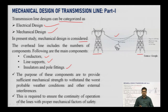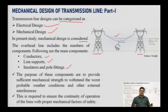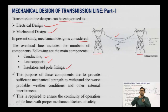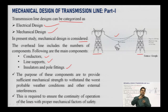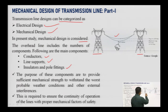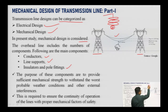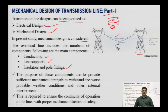Insulators are needed because the supportive system is a metallic structure and the conductor is also metallic. We need to electrically isolate these two from each other. We do this by inserting a dielectric medium — an insulator — between them. You may have seen disk-type structures hanging on transmission towers; those disk structures are the insulators. We will discuss them in detail in upcoming lectures.